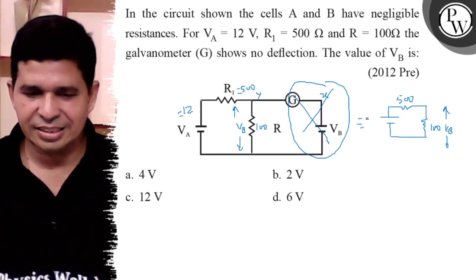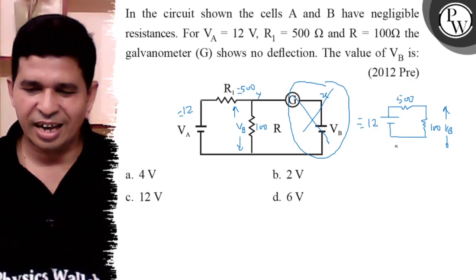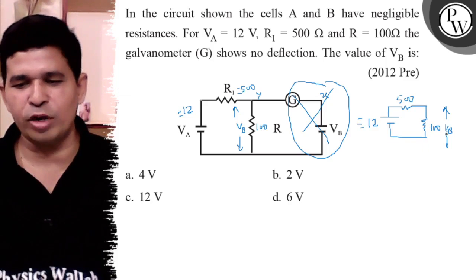It's 12 volt total. Now it's in series and we have to distribute the voltage in the ratio 100 is to 5.